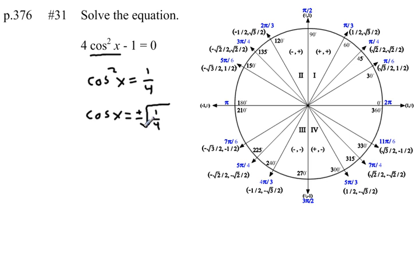Because we can have some positive or negative answers that we square, and that'll give us the same value. Now, let's just simplify this. Square root of 1 is 1. Square root of 4 is 2. So, I can rewrite this as the cosine of x equals plus or minus 1 half.